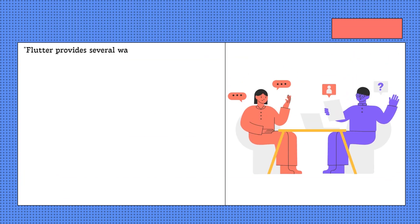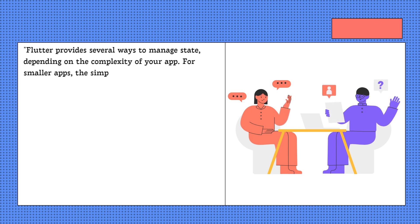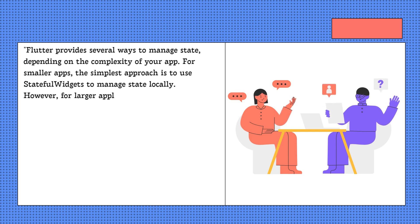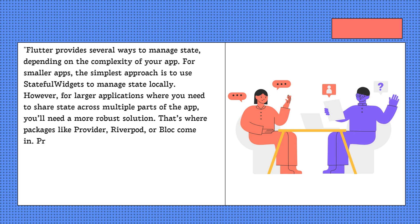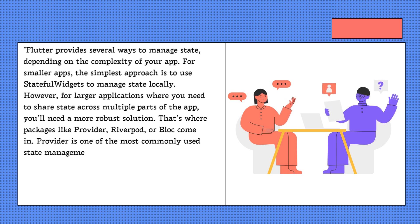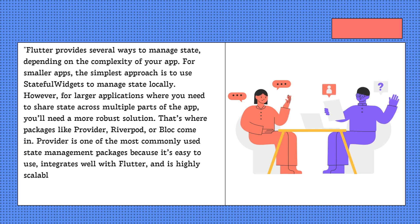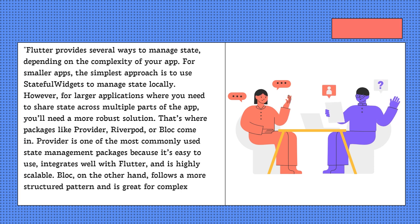Flutter provides several ways to manage state, depending on the complexity of your app. For smaller apps, the simplest approach is to use stateful widgets to manage state locally. However, for larger applications where you need to share state across multiple parts of the app, you'll need a more robust solution. That's where packages like Provider, Riverpod, or Bloc come in. Provider is one of the most commonly used state management packages because it's easy to use, integrates well with Flutter, and is highly scalable. Bloc, on the other hand, follows a more structured pattern and is great for complex apps that need more control over their state.